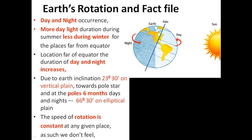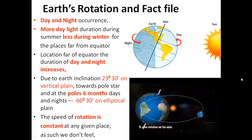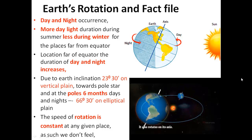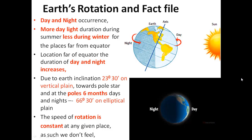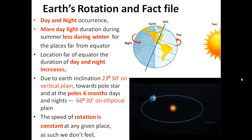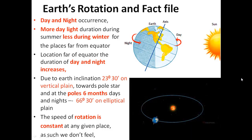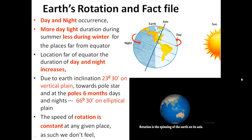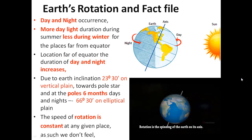Now we learn about Earth's rotation in detail and some facts. Regarding day and night occurrence — as you can see, while Earth rotates on its own axis, day and night happen. There is more daylight during summer and less during winter for places far from the equator.